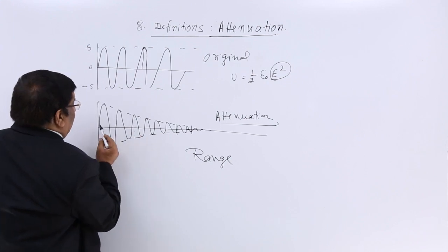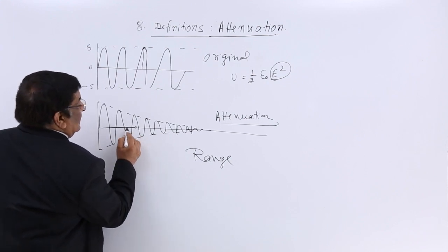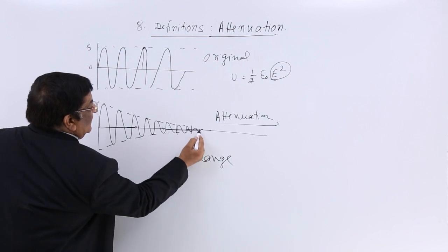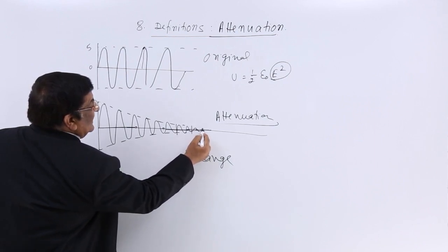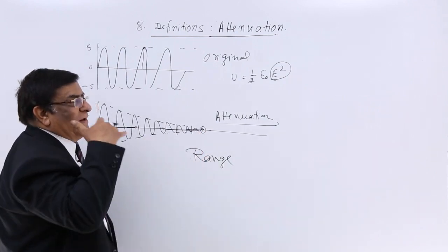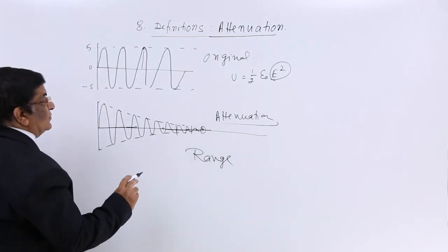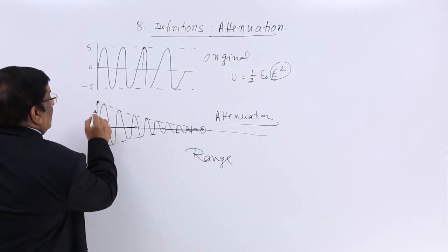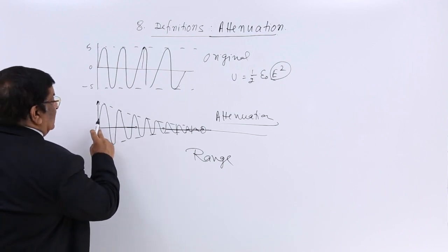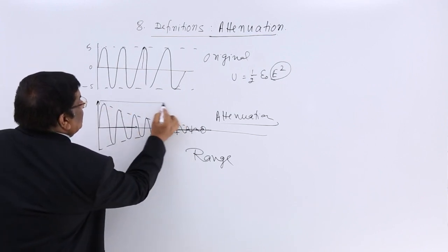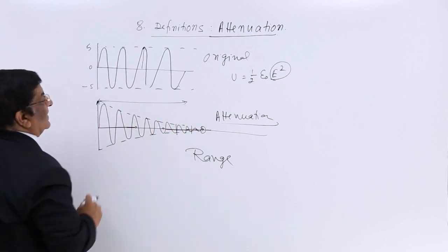This distance, here I am getting the signal, here I am getting the signal, but when I reach here, almost I am not able to listen to anything. So the range of this tower, the range of this signal, is this much. If it is 2 kilometers, I will say it is 2 kilometers. This is known as range.